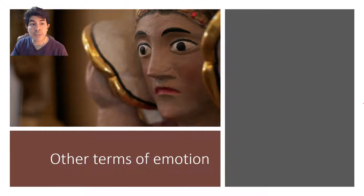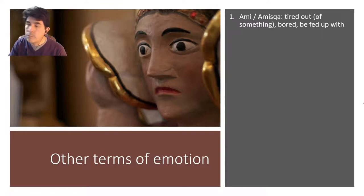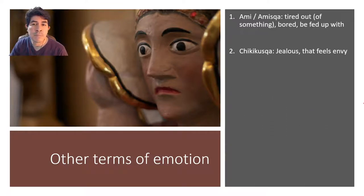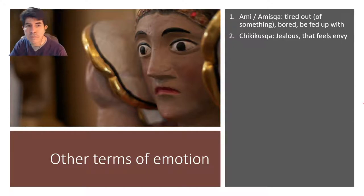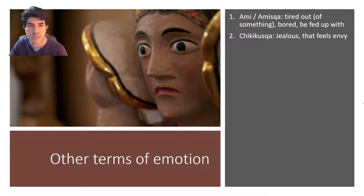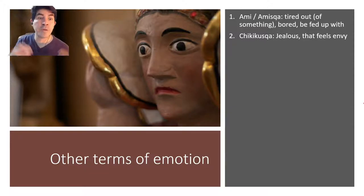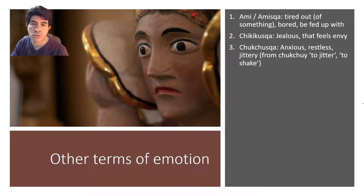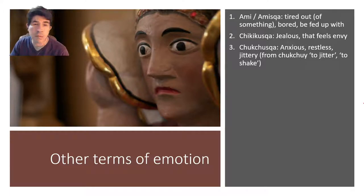Here is a list of other emotion terms. 'Amiska' we saw already. 'Chikikuska,' from the verb 'chikui' meaning to feel jealousy or envy — so 'chikikuska' means jealous, experiencing jealousy. 'Chukchuska,' from 'chukchuy' meaning to shake or tremble, can mean anxious, restless, or jittery. 'Manchariska,' from 'manchai' meaning to fear — 'manchariska' means fearful, afraid, or scared, as in something scared you and you became frightened.